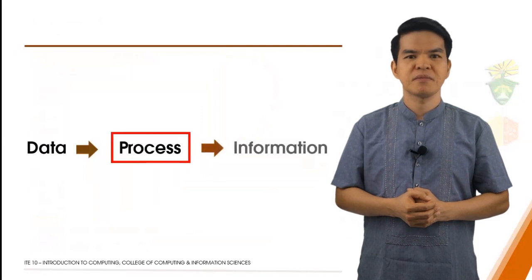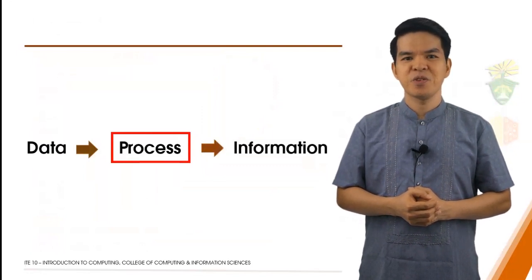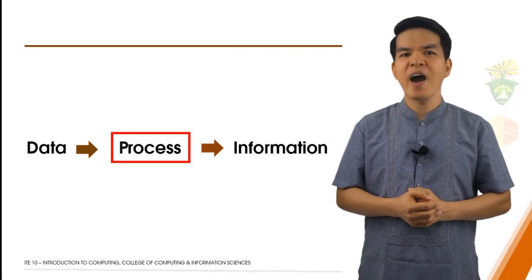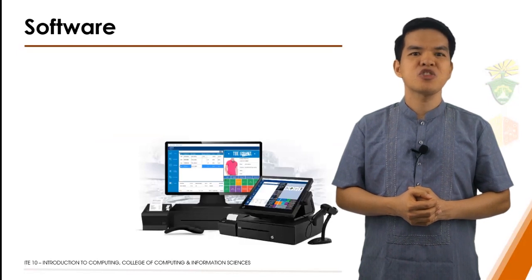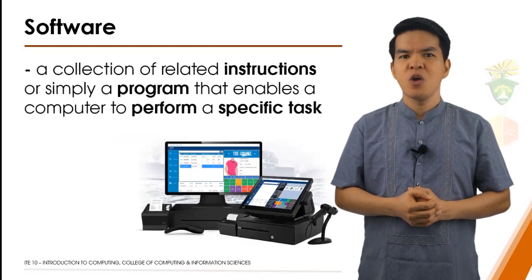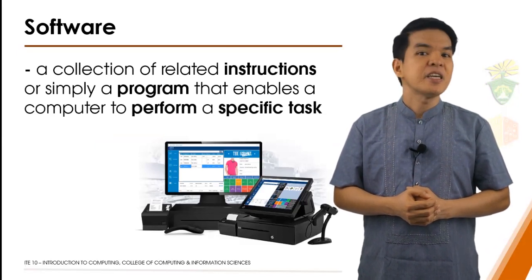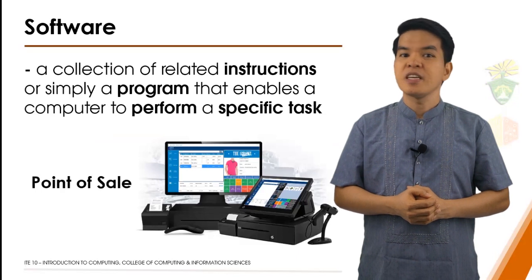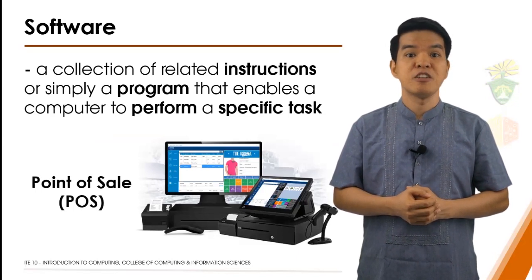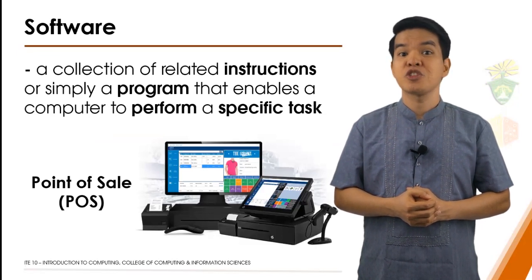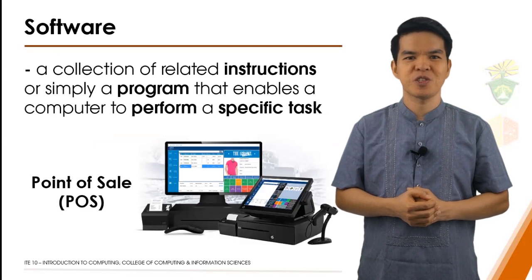But how is this possible? Computers carry out processes using instructions — these are the steps that tell the computer how to perform a task, and this is called software. Software is a collection of related instructions, or simply a program, that enables a computer to perform a specific task. In the previous example, a point-of-sale program told the computer to process the item as input data, which resulted in output information called the cash register receipt.